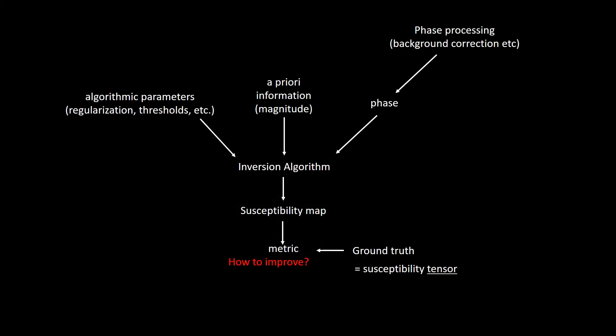With our simple forward model, we neglected some contributions that might be better explained by including chemical exchange and Lorentz-Tanzer models. Finding error metrics that better reflect visual quality is another open question in our field. We also neglected some cross-terms in our ground-truth susceptibility maps, which I will discuss next.